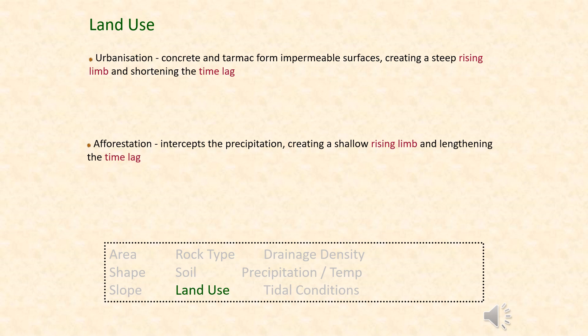Land use — how people use land — is also an important factor. Any urbanized area has a lot of impermeable surfaces through cement, concrete, and tarmac, so water drains very quickly. In urbanized environments, storm drains actively reduce surface water and drain into the river, increasing the rising limb and discharge, reducing the lag time, and potentially increasing the chance of flooding.